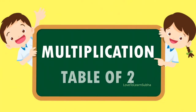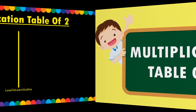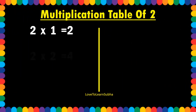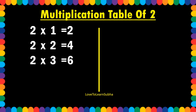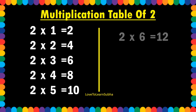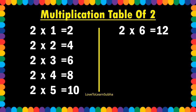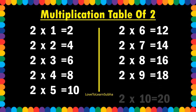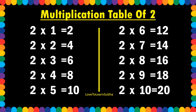Multiplication table of 2. 2 1s are 2, 2 2s are 4, 2 3s are 6, 2 4s are 8, 2 5s are 10, 2 6s are 12, 2 7s are 14, 2 8s are 16, 2 9s are 18, 2 10s are 20.